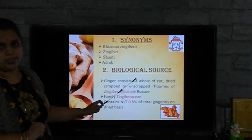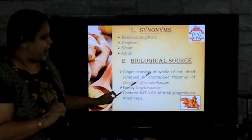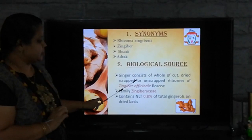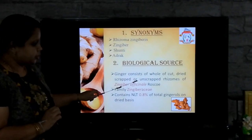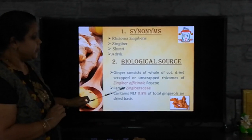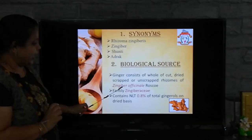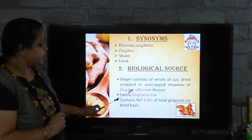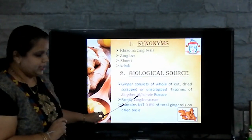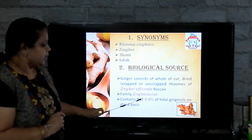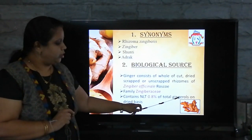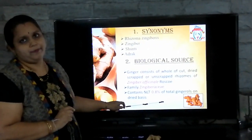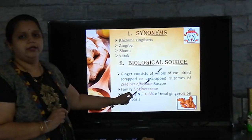When I say biological source, it consists of four different parts. First, it talks about the part which is important. Second, it talks about the nature of that part, whether it is scrapped or unscrapped. Next, it talks about the botanical name — here it is Zingiber officinale, where Zingiber is the genus and officinale is the species. Next, it talks about the family, that is Zingiberaceae. And not less than 0.8% of total gingerols is the amount of active constituent which has to be present.